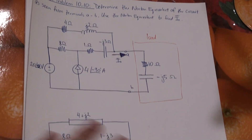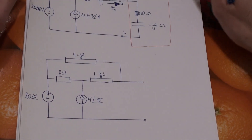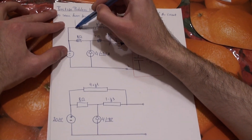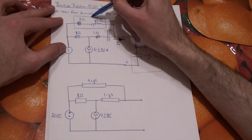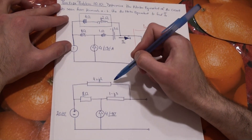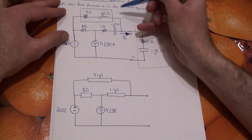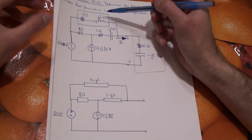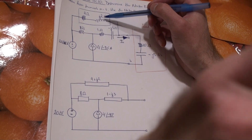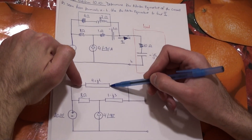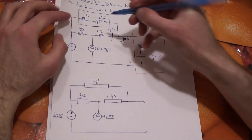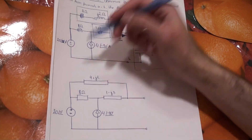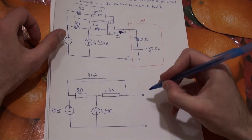We remove the load and the circuit becomes simpler. I've replaced the two circuit elements with just one block representing the entire impedance. Remember that impedances are complex numbers — the real part is resistance and the imaginary part is reactance. We can combine them into a block to make it easier to work with.